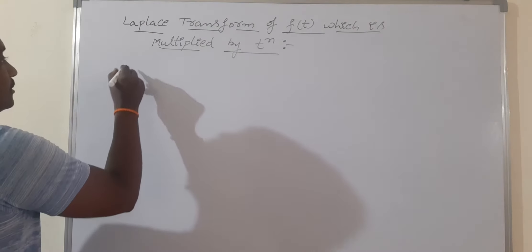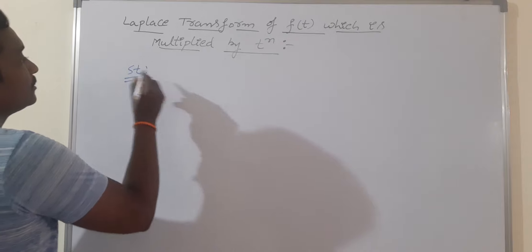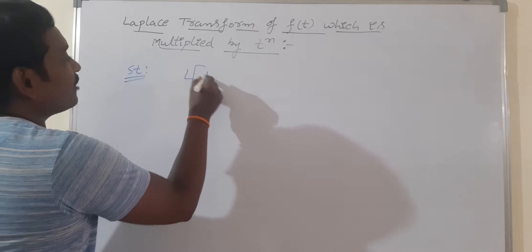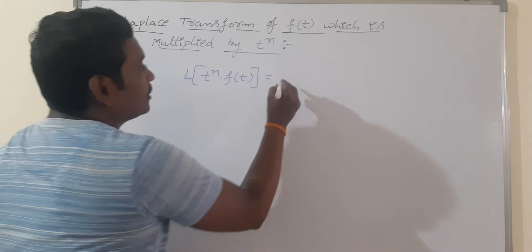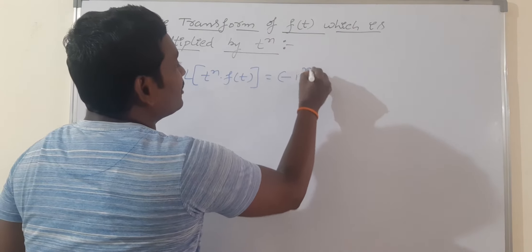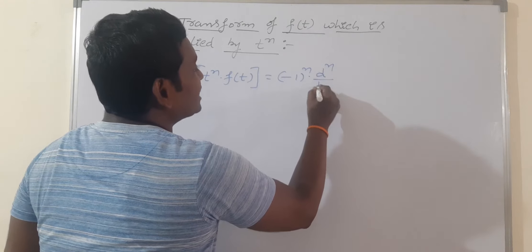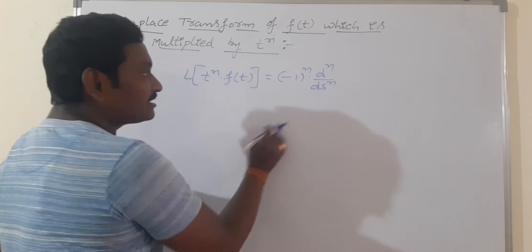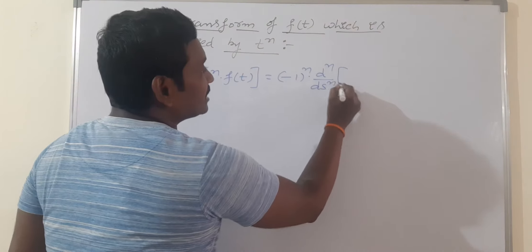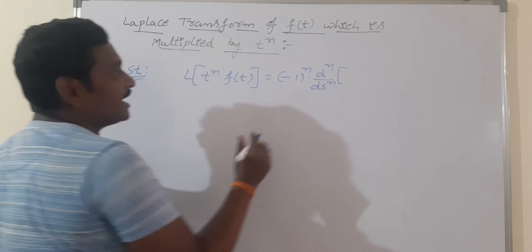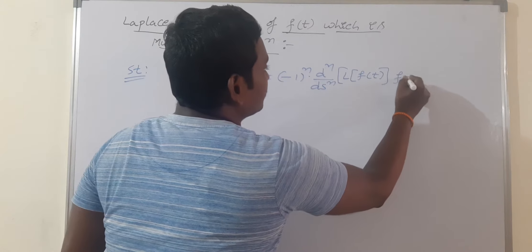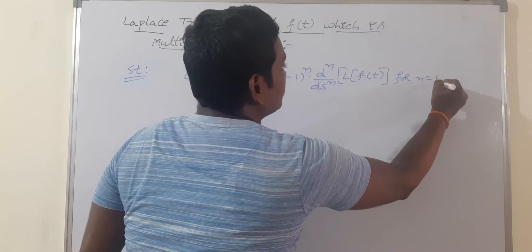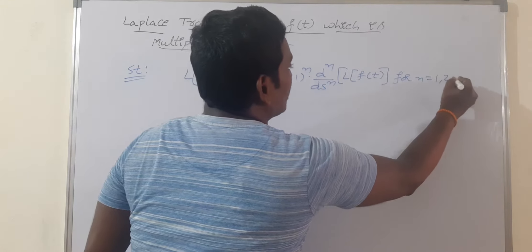Write the statement: The Laplace transformation of t^n · f(t) is equal to (-1)^n times the nth derivative with respect to s of L{f(t)}, that is (-1)^n · d^n/ds^n [L{f(t)}], for n = 1, 2, 3 and so on, where n must be a positive integer — a natural number.